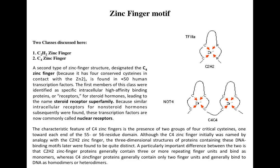The second type is C4 zinc finger proteins. They are generally found in 50% of human transcription factors. They were previously known as intracellular high-affinity binding proteins or receptors for steroid hormones, which is why they were considered part of the steroid superfamily. Later it was discovered that some intracellular receptors also bind non-steroid hormones, and they were renamed nuclear receptors.